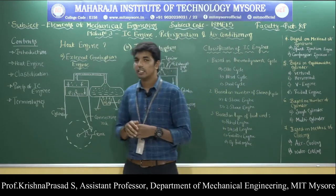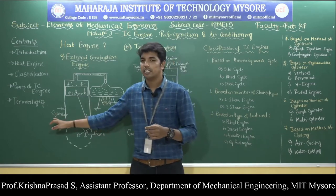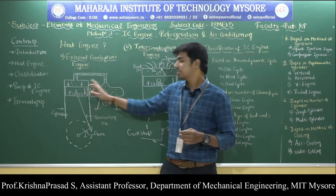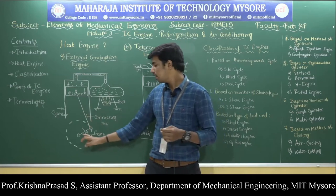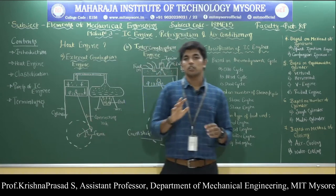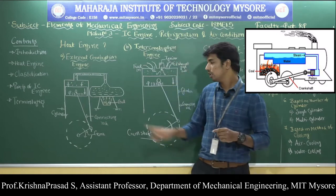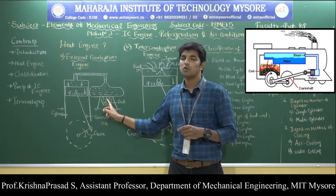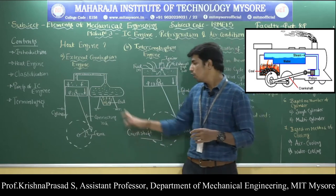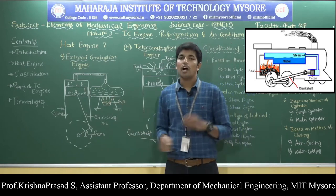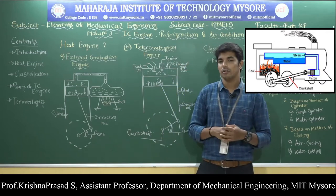The main parts of the internal combustion engine are: cylinder, piston, connecting rod, crank, and crankshaft. In case of the external combustion engine, combustion of the fuel takes place outside the engine cylinder. In external combustion engines, coal or steam generated from the boiling of water is mainly used as fuel.